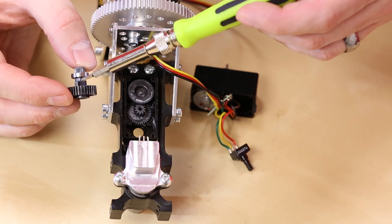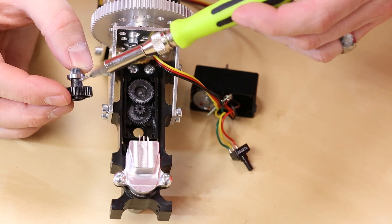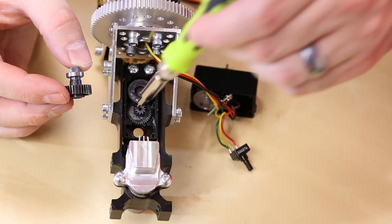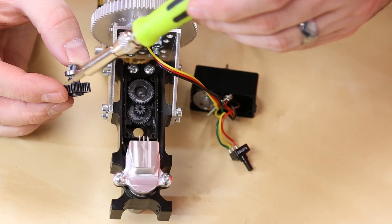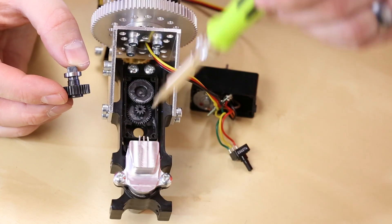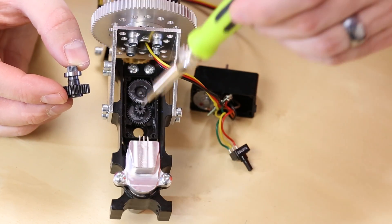As you can see from the final output gear, there's a little nub or notch right there. This actually corresponds with a track on the inside of the housing and actually prohibits the final output shaft from turning a full 360 degrees.